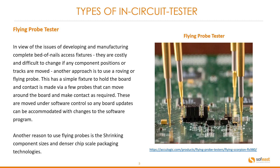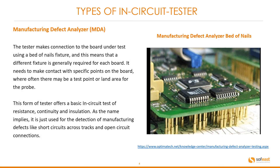In view of the issues with developing and manufacturing a complete bed-of-nails access fixture — which is costly and difficult to change if any component positions or tracks are moved — another approach is to use a roving or flying probe. This has a simple fixture to hold the board, and contact is made via a few probes that can move around the board as required. These are moved under software control, so any board updates can be accommodated with changes to the software program. Another reason to use flying probes is the shrinking component size and denser chip-scale packaging technologies.